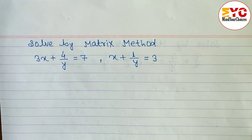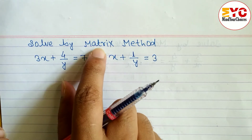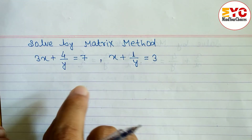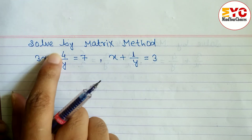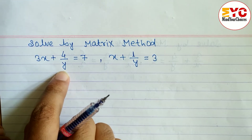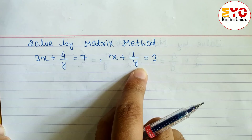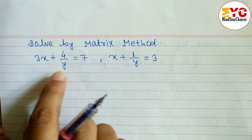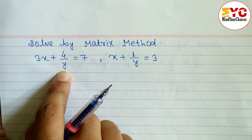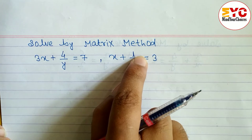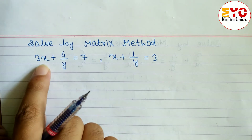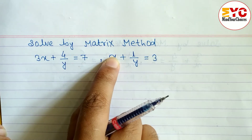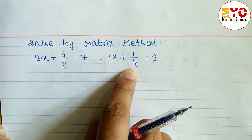Hello everyone, today in this video we are going to learn how to solve equations using the matrix method. We have to find out the value of x and y. You can see here 3x plus 4 by y — y is in the denominator. If y is in the denominator in one equation but y is in the numerator in another, that is a mistake. Both should be in the denominator, or x should be in the numerator and y in the denominator — they should be similar types of equations.